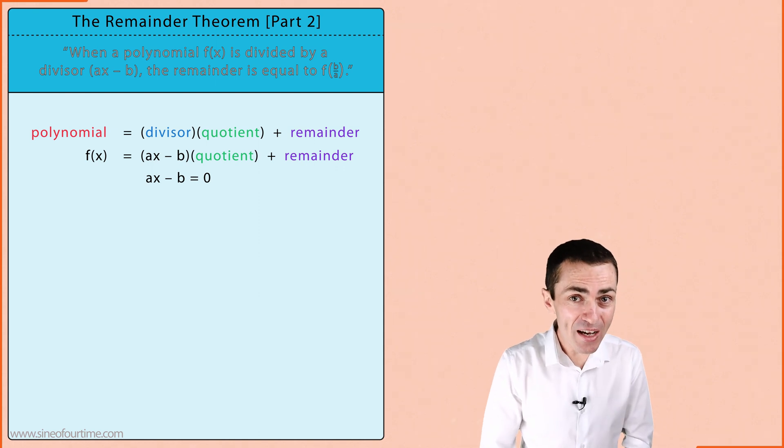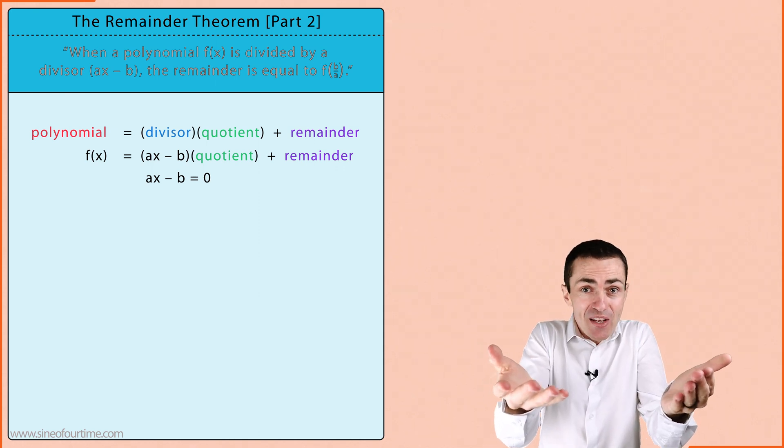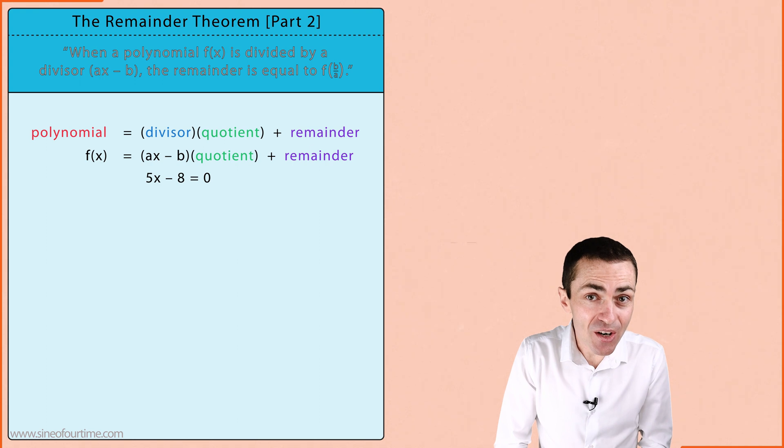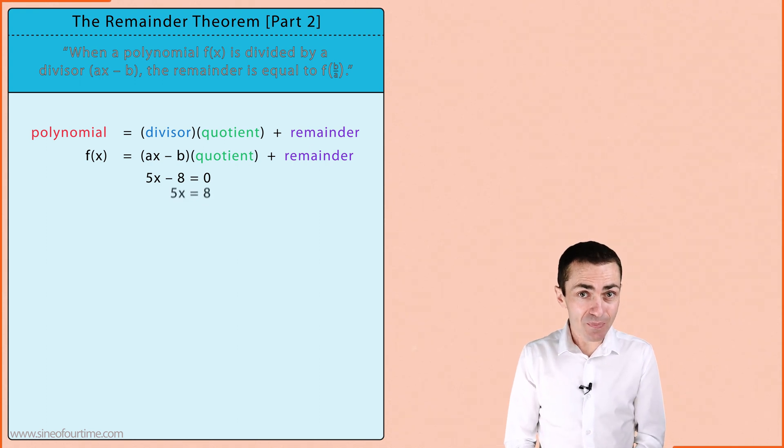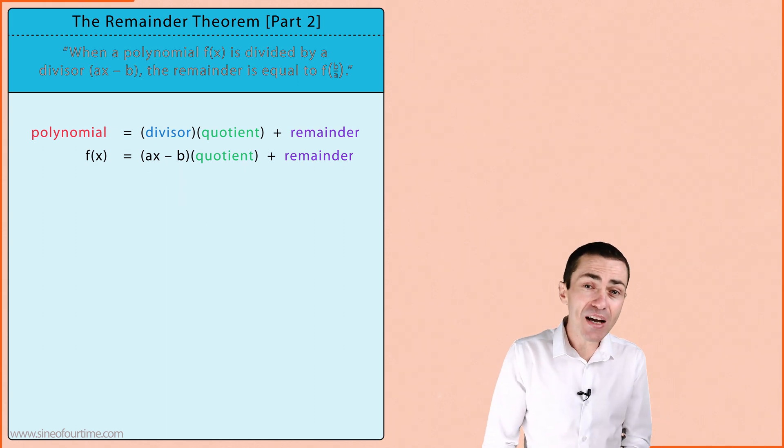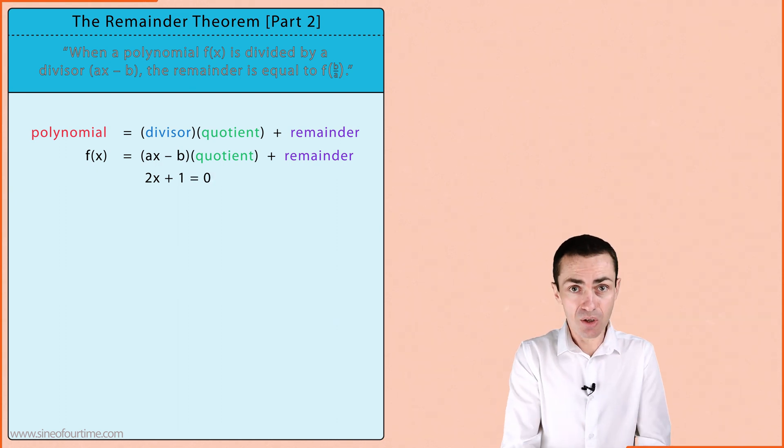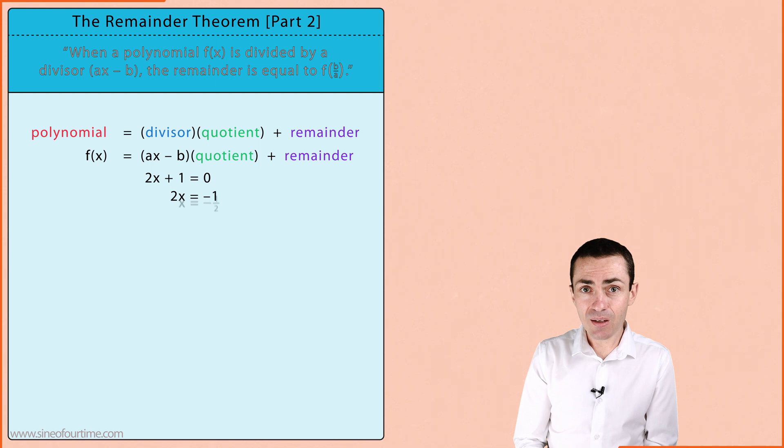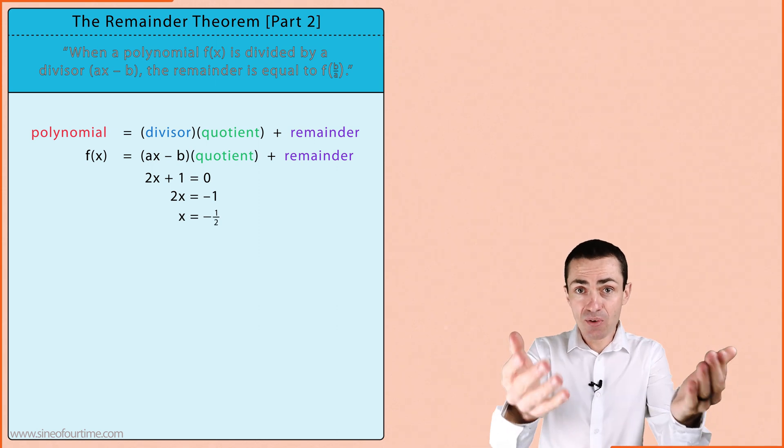For example if the divisor is 5x minus 8 we make it equal to zero and solve for x which gives us positive 8 over 5. Or perhaps the divisor is 2x plus 1. All we need to do is make it equal to zero and again solve for x which gives us negative 1 over 2.